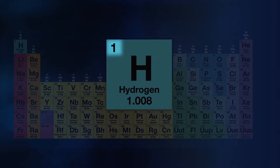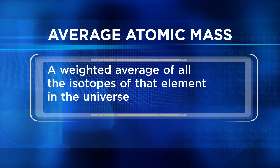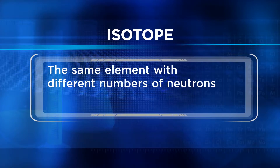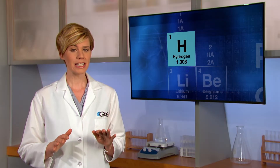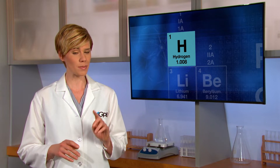Each element has its own atomic number, which represents the number of protons in the nucleus of an atom. Each box on the periodic table also contains a number representing the element's average atomic mass, which is measured in atomic mass units, commonly referred to as AMU. Average atomic mass is a weighted average of all the isotopes of that element in the universe. An isotope is the same element with different numbers of neutrons, and the number of neutrons present in atoms of a particular element can be different from atom to atom.